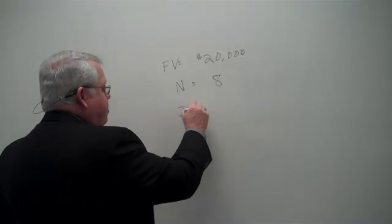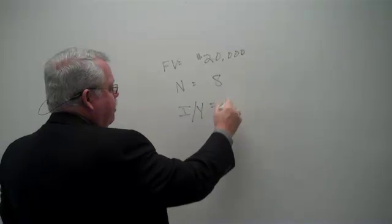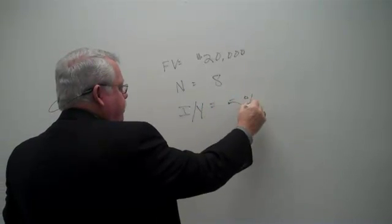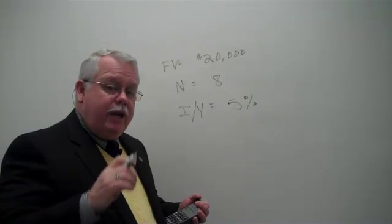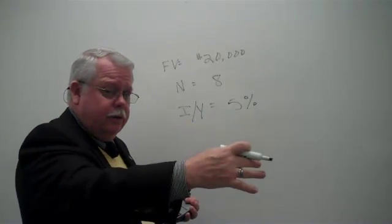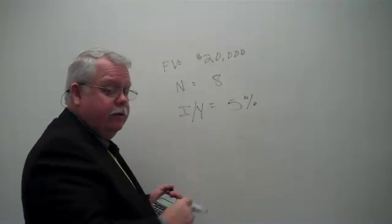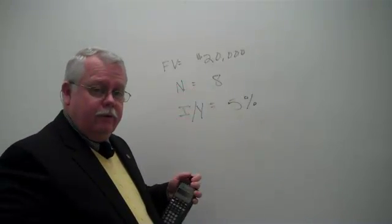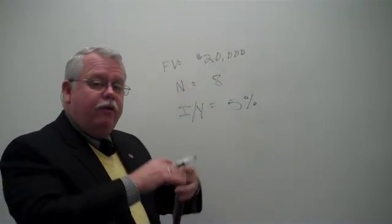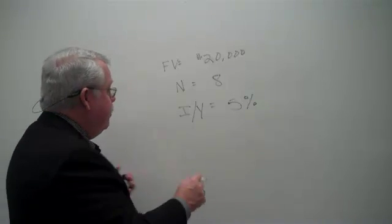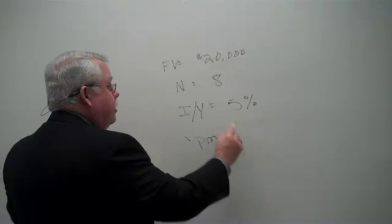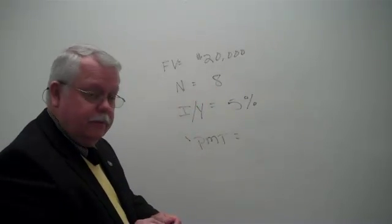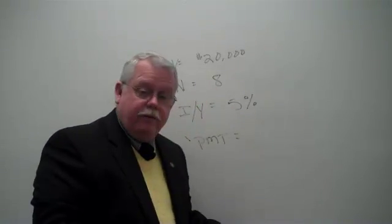And I believe I can earn on my money, I can earn, let's say, 5%. How much money each year do I need to put in my account for eight years in order to build up that $20,000? So what I'm going to calculate is my payment in order to reach my goal. And the calculator will do that for us.